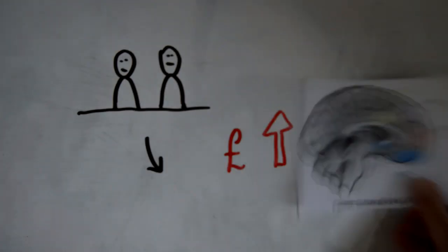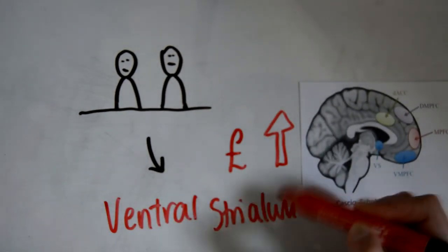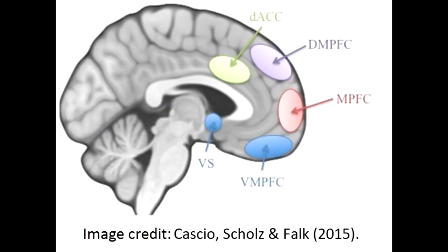Results showed that being observed not only increased donation rates but also increased activation in the ventral striatum, a brain area associated with reward, when participants were seen to be donating.